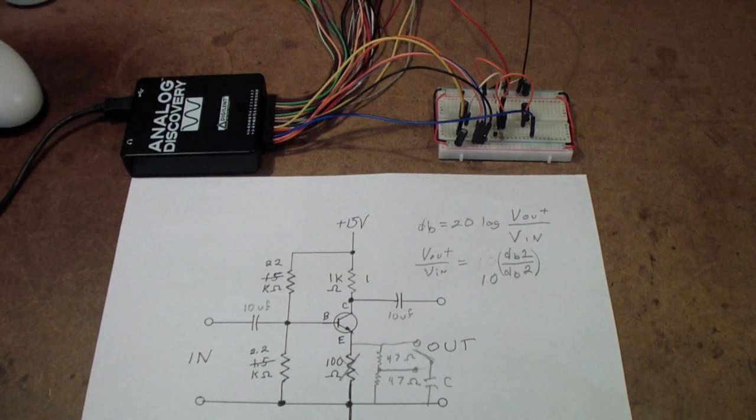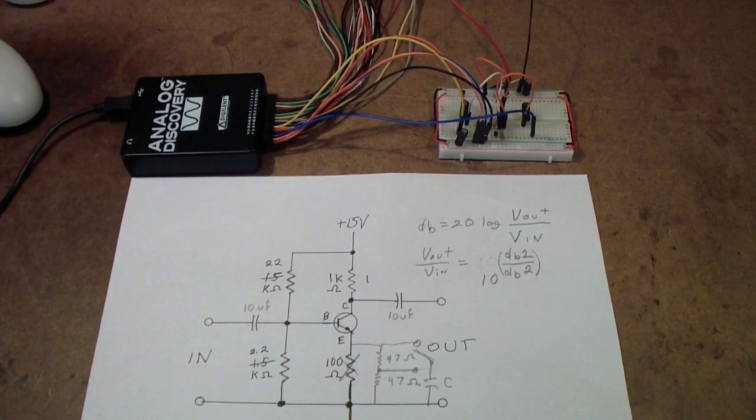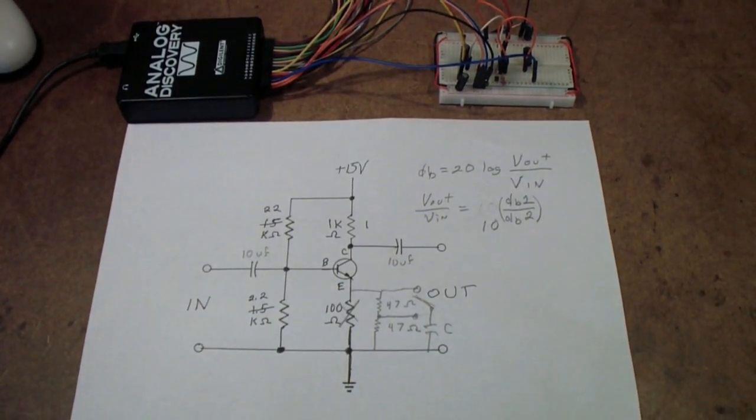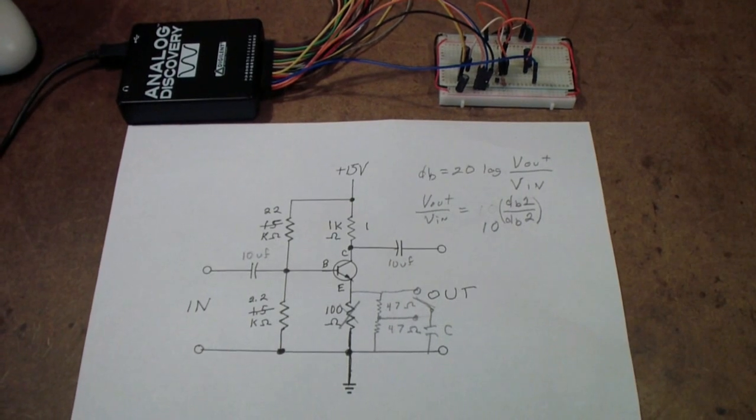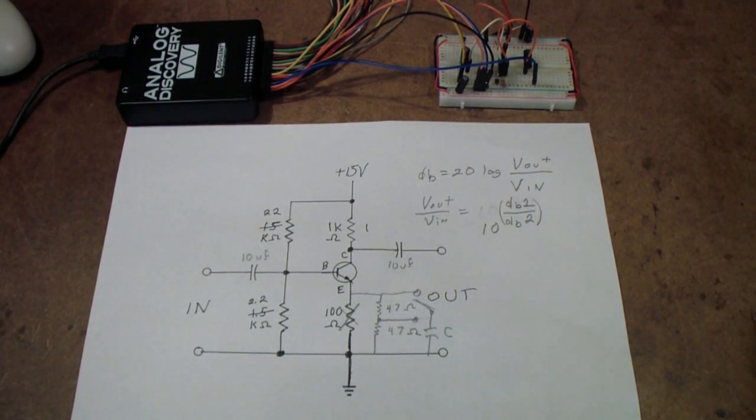I'm returning to the circuit that we first saw in part one, this simple one transistor amplifier, for the purpose of doing some further experiments and trying to investigate things like frequency response a little further, and also some issues that I just touched on in the first two parts having to do with feedback.